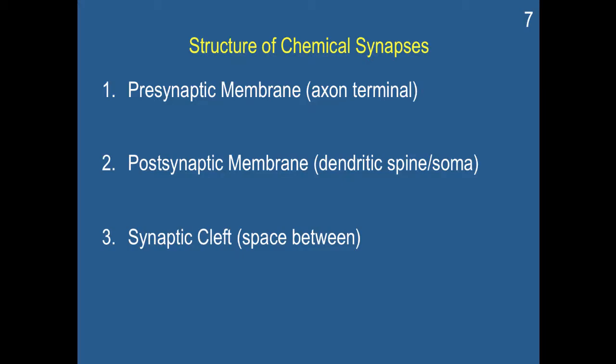There are a number of structures of chemical synapses that you need to be aware of. First, we have the presynaptic membrane, which is the end of the axon. Next, we have the postsynaptic membrane — the dendrite, spine, or cell body receiving the signal from the preceding neuron. And then you have the synaptic cleft, which is the space between.